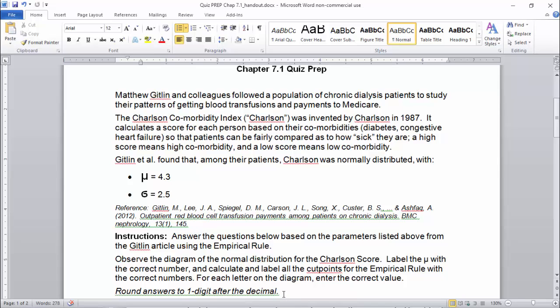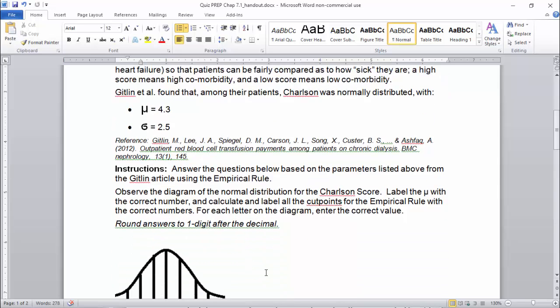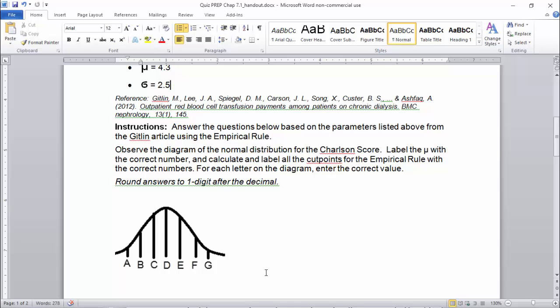So that's the stage for chapter seven quiz prep. Now we're going to start in 7.1. We're going to focus on this thing called the empirical rule. So I'm going to explain that next.